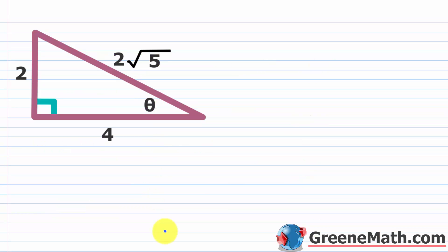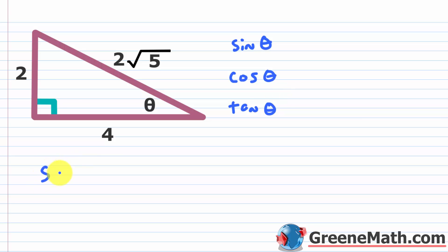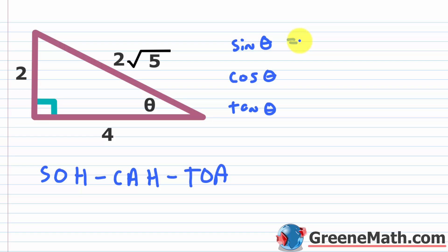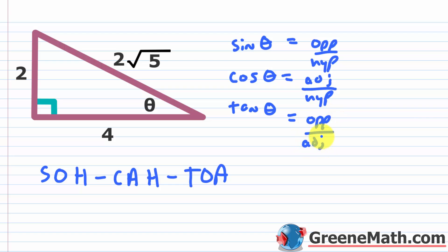Let's look at an example and find the six trigonometric functions. We want sine, cosine, and tangent of theta — we can get the other three by flipping. The hypotenuse is across from the right angle, so identify it first. This side is adjacent to angle theta, and the side across from theta is the opposite. Once you've labeled everything, you just plug in.